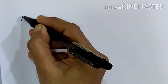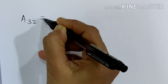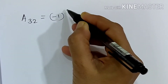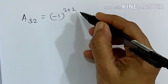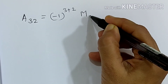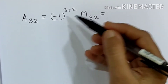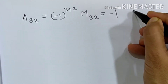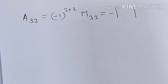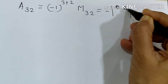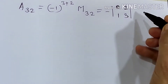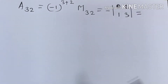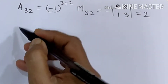Next, A32 is equal to minus 1 raised to 3 plus 2, into M32, so minus of the determinant. Deleting the third row and second column gives elements 0, 2, 1, 3. That equals 0 minus 2, which is minus 2. With the outside minus sign: minus of minus 2 gives plus 2.